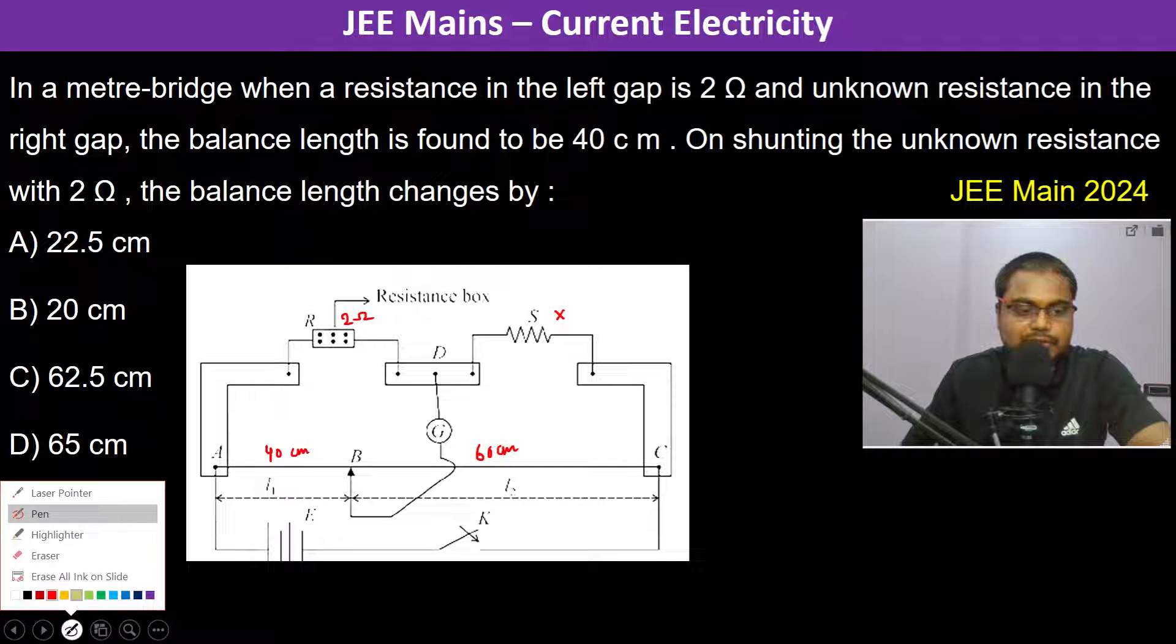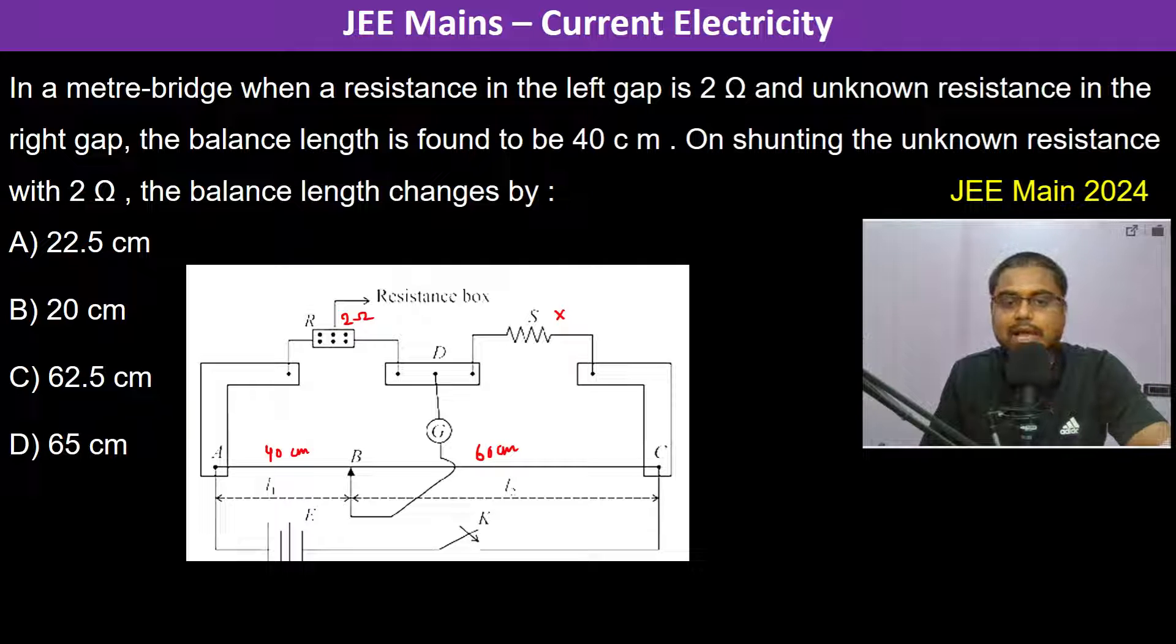...that this works on Wheatstone bridge principle. So therefore the galvanometer will have zero reading when 2 by x becomes 40 centimeter divided by 60 centimeter, actually ρ into l by a, 40 centimeter divided by a...